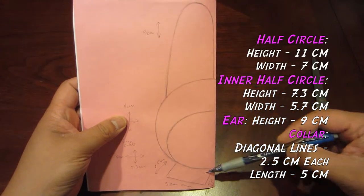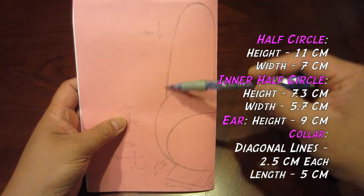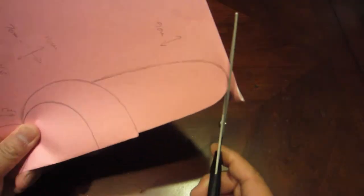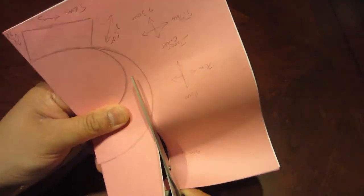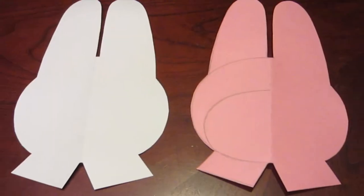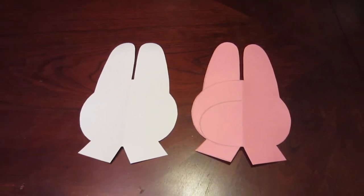Now draw out My Melody outline like this. Always pause the video when needed to draw out the outline. Once ready, start cutting out. When done, you should have two color cutouts, pink and white.